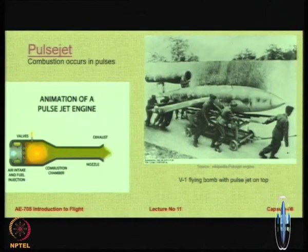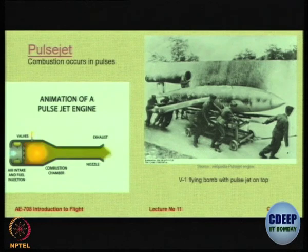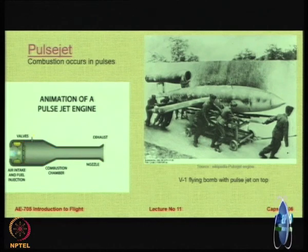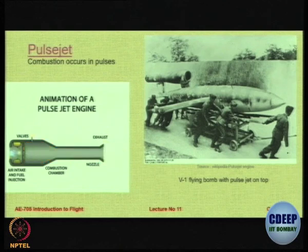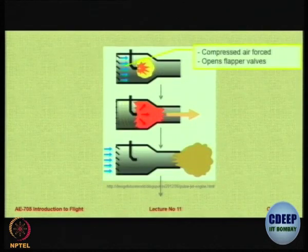During World War II, London was bombed heavily by the Germans using what is called a flying bomb — the V1 flying bomb. On the top there is a pulse jet engine mounted. Because this was a bomb, it was a disposable kind of aircraft, and hence you could build them in large numbers and power them to give the required thrust values. Here is the working of the pulse jet.